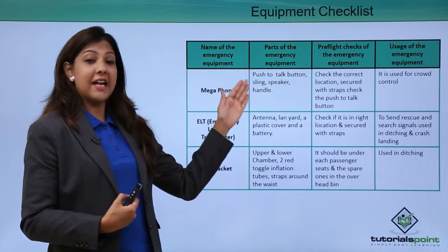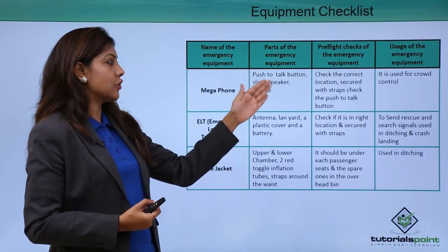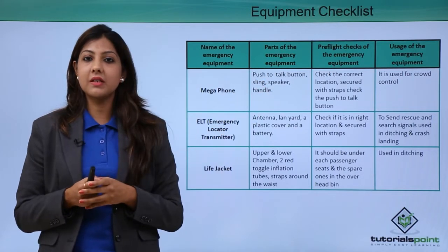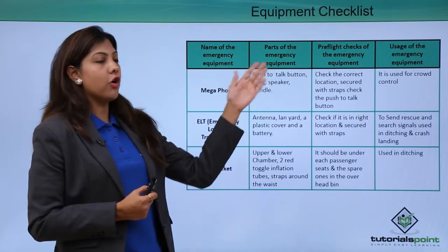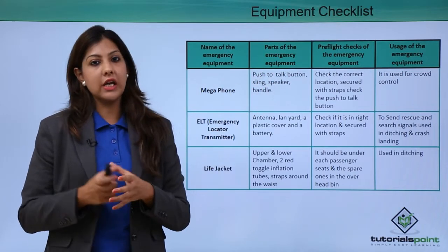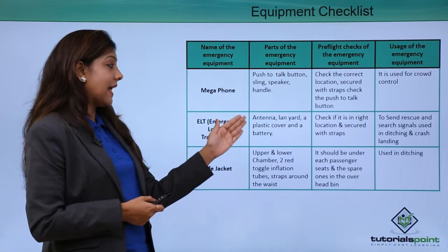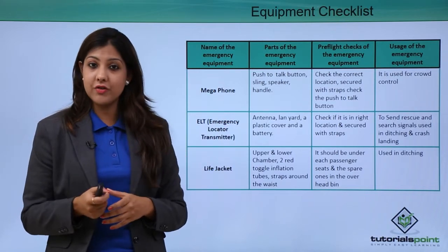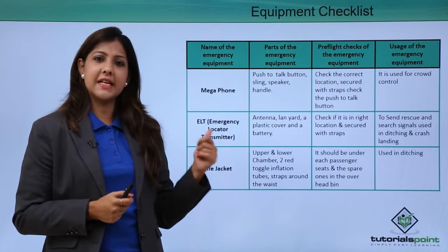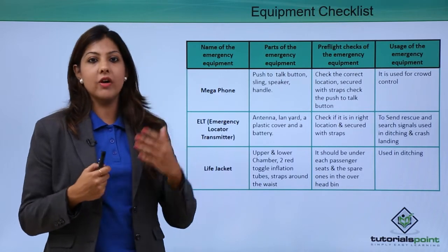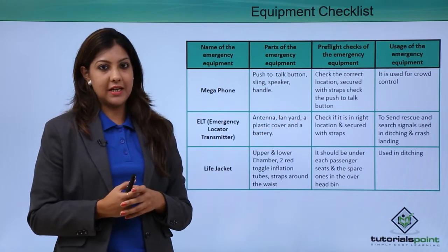The megaphone has a push-to-talk button, sling, speaker, and handle. The crew must check that it is secured with straps and that the push-to-talk button is working effectively. It is used for crowd control during emergencies on land or in water. The ELT has an antenna, lanyard, plastic cover, and battery. Crew must check it is in the right location secured with straps; it is generally kept in the aft of the cabin in the overhead bin compartment for search and rescue signaling.